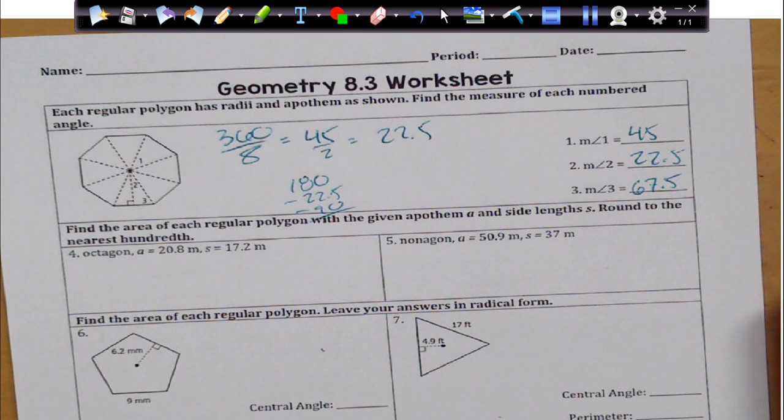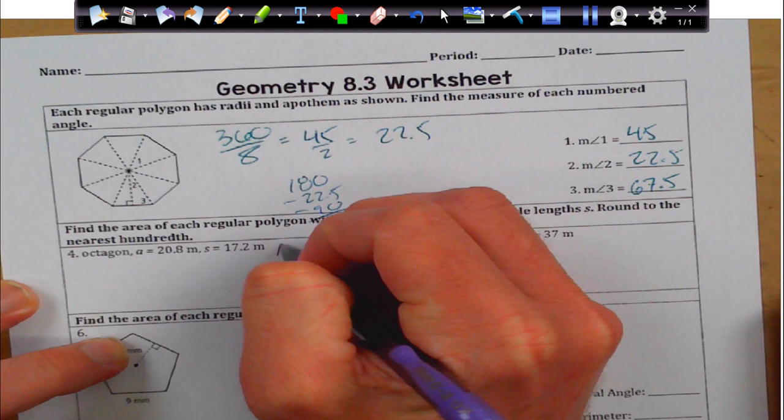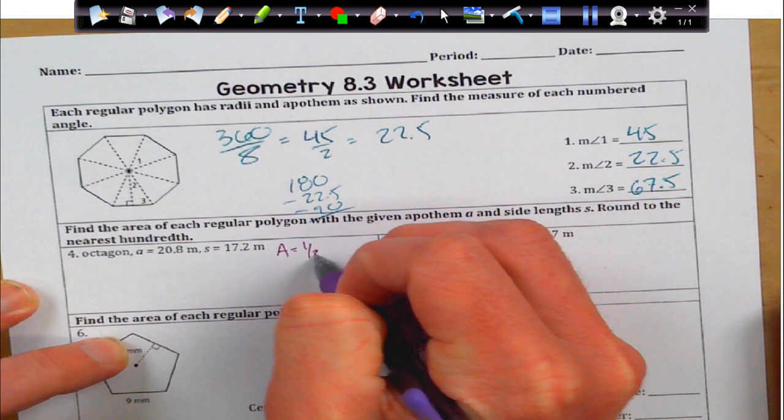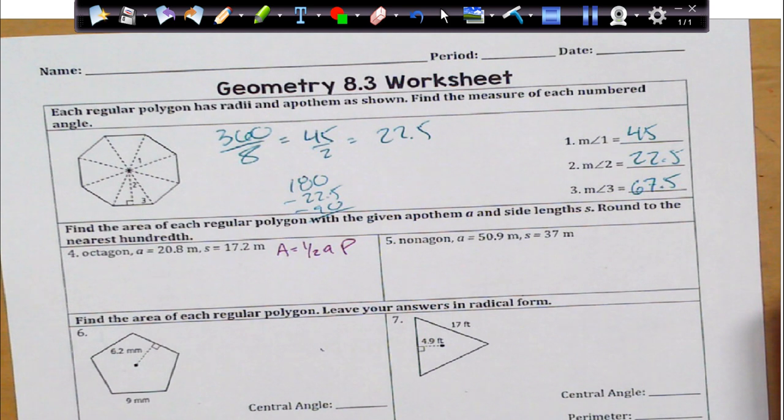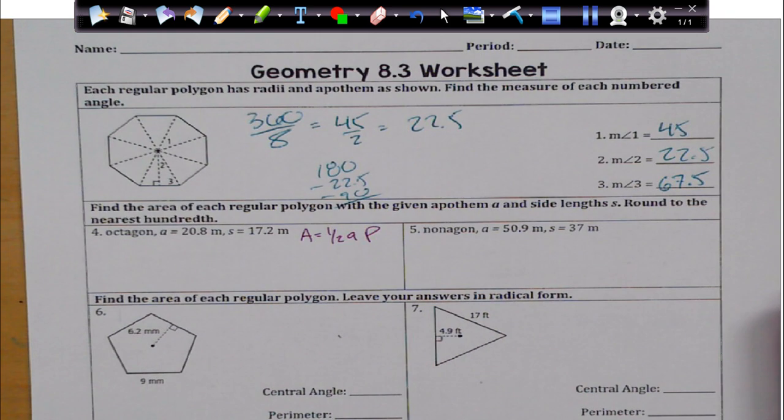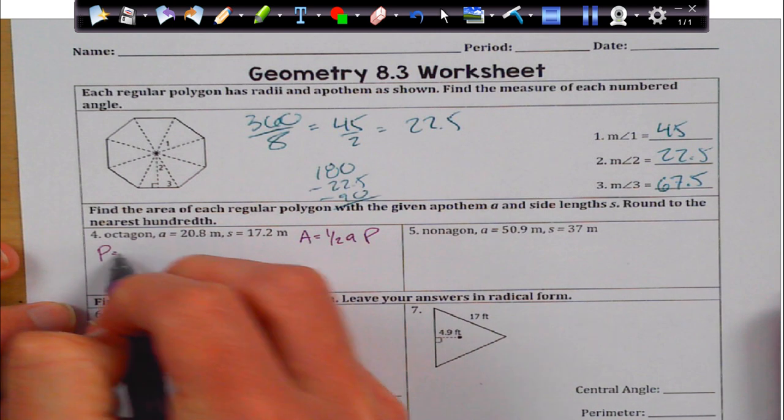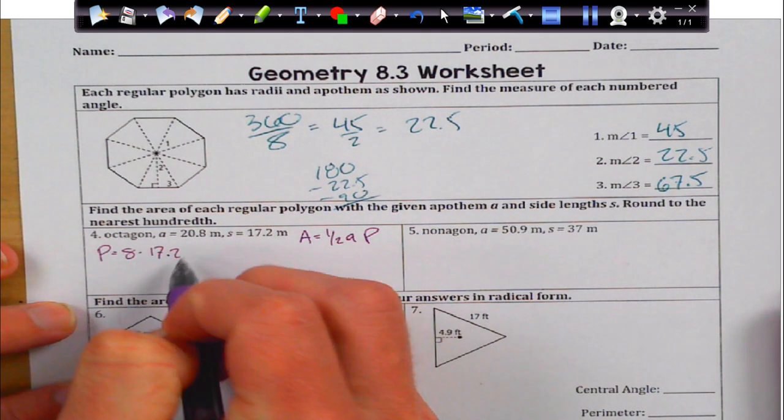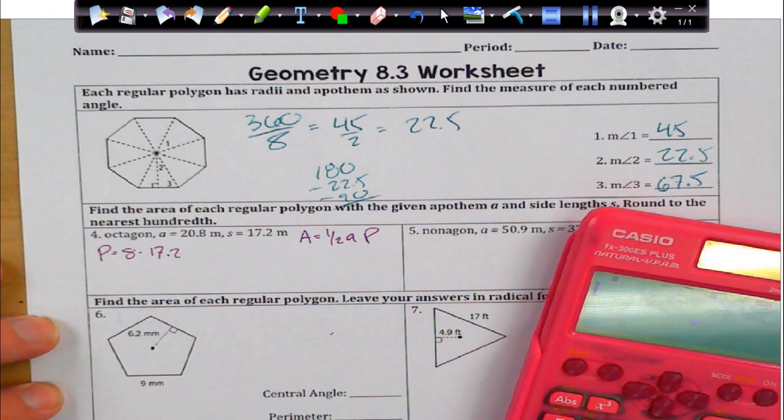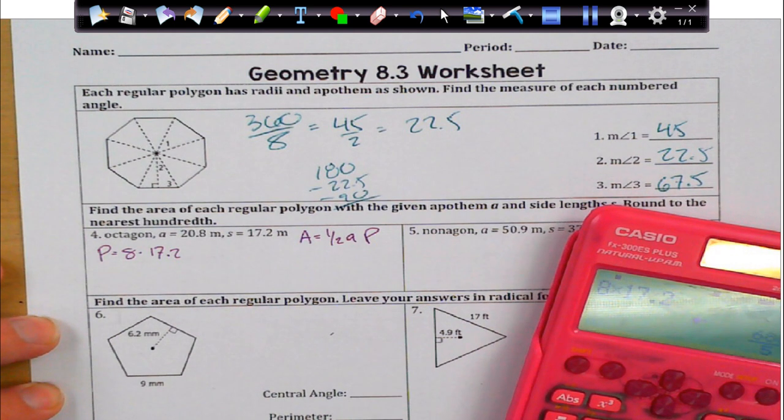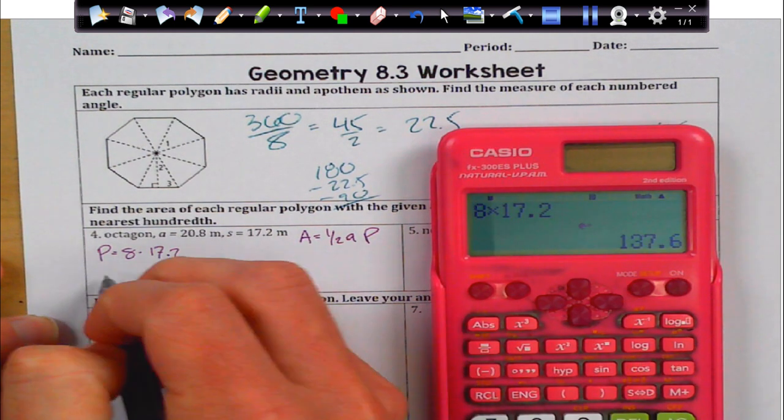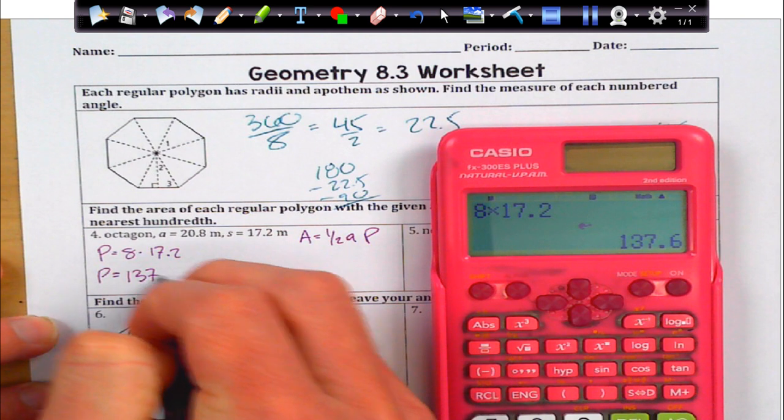Alright, number 4. It says find the area of a regular polygon with a given apothem and side length. Remember, our apothem is very important. Our side length is very important. We want this formula, 1 half apothem times perimeter. So, really, I just have to go ahead and justify my perimeter, which is just going to be 8 times my side length of 17.2. So, I get 8 times 17.2 in my calculator, which is going to give me about a perimeter of 137.6.